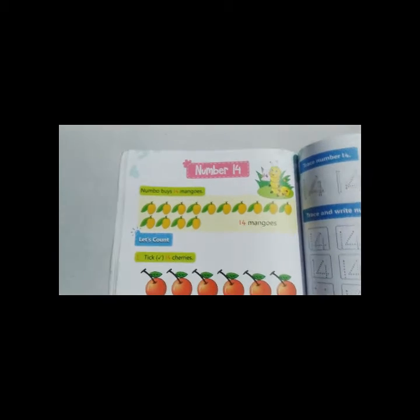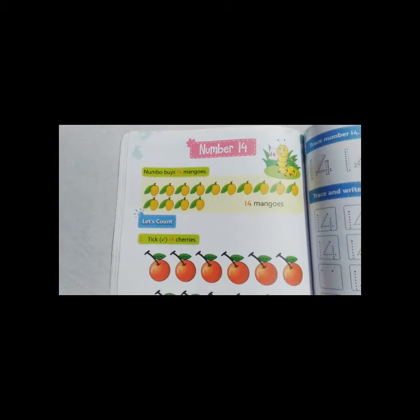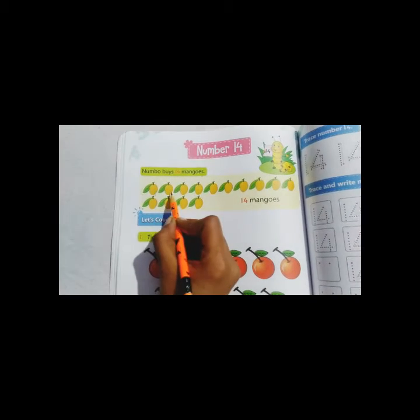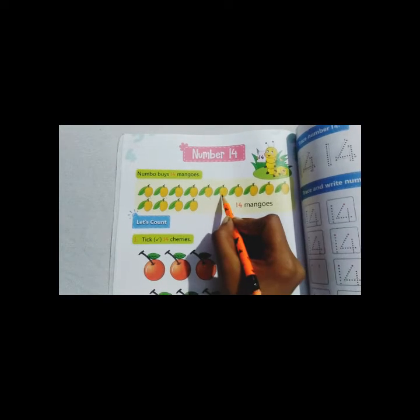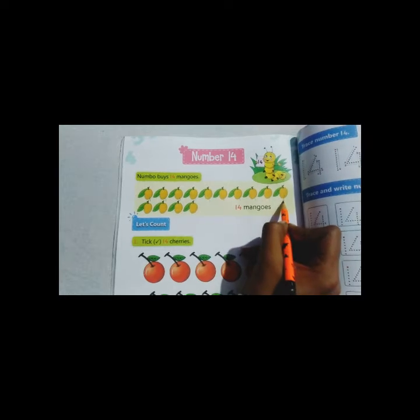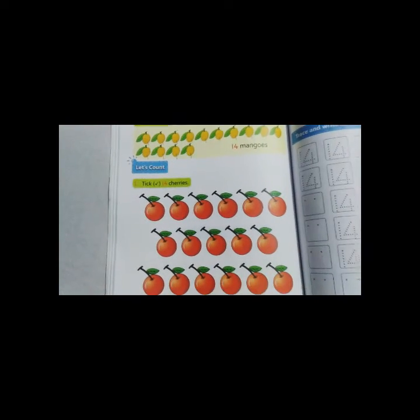Number 14. Very good. Now count the mangoes. 1, 2, 3, 4, 5, 6, 7, 8, 9, 10, 11, 12, 13, 14. How many mangoes? 14 mangoes.